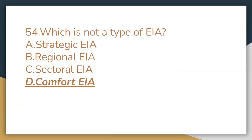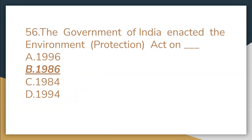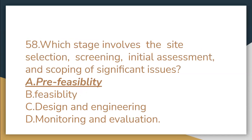Which is not a type of EAA? Comfort EAA. How many main stages are in the EAA project cycle? 6. The Government of India enacted the Environment Protection Act in 1986. The currently applicable EAA notification was introduced by the MOEF in 2006. Which stage involves site selection, screening, initial assessment, and scoping of significant issues? Pre-feasibility.